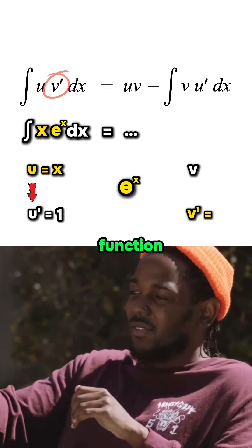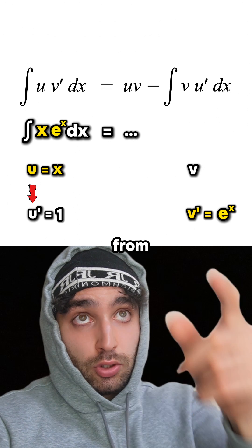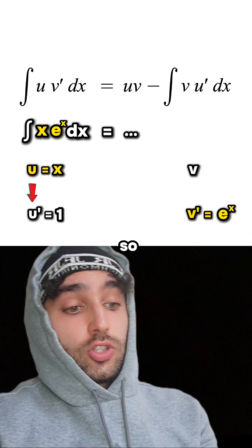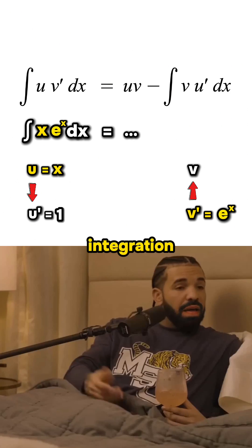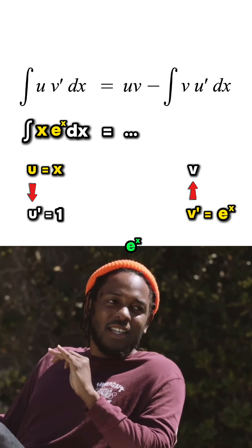v prime will be our other function e to the x. So to get from u to u prime we differentiated, so to get from v prime to v, integration. But yeah, integrating e to the x with respect to x also equals e to the x.